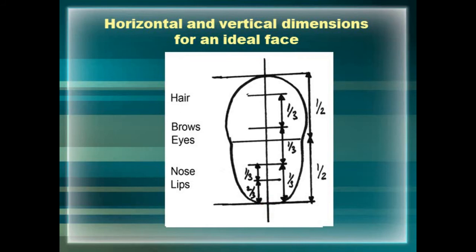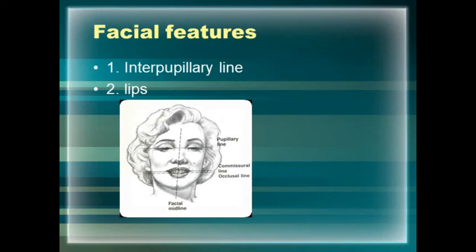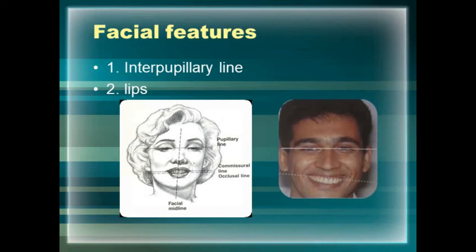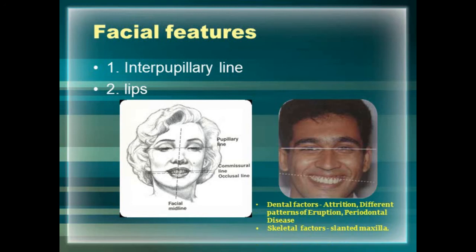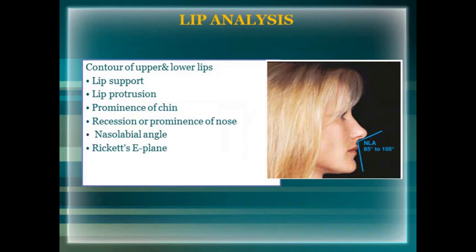Important facial features in the facial composition include the interpupillary line and the lips. The interpupillary line is perpendicular to the midline of the face and parallel to the occlusal plane or commissural line. If the interpupillary line is not parallel to the occlusal plane, this can happen due to attrition, different patterns of eruption, periodontal disease, or skeletal factors such as a slanted maxilla. The lips form the boundaries of smile design. If there is any major discrepancy in these features, correction of facial components must be considered before addressing dental components.